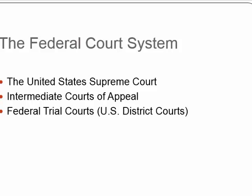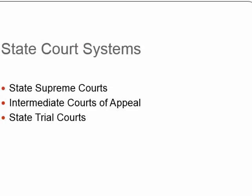Imagine a triangle: the fattest part at the bottom is the federal trial courts — there are a lot of them. Then you get a thinner part, the intermediate courts of appeals — fewer of them. At the very tip is the US Supreme Court. It's a hierarchy: you enter at the bottom, have lots of trial courts, limited right to appeal, fewer courts, and then one final shot at the US Supreme Court. The state court system is no different: lots of state trial courts at the bottom, fewer intermediate courts of appeal, then a final state supreme court.